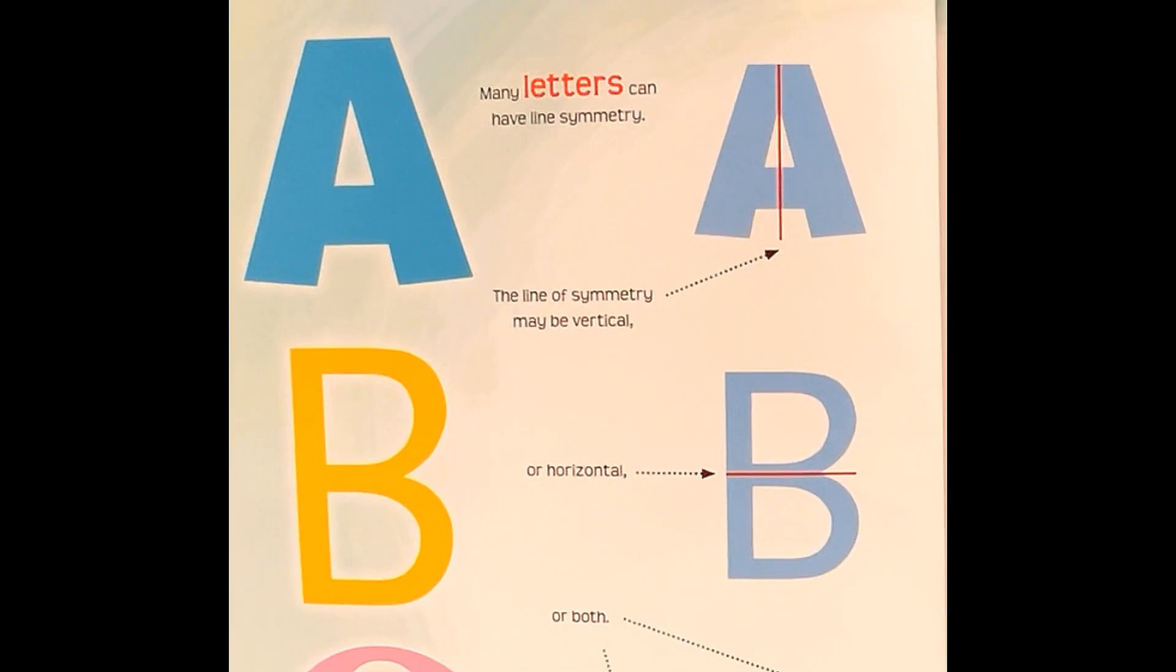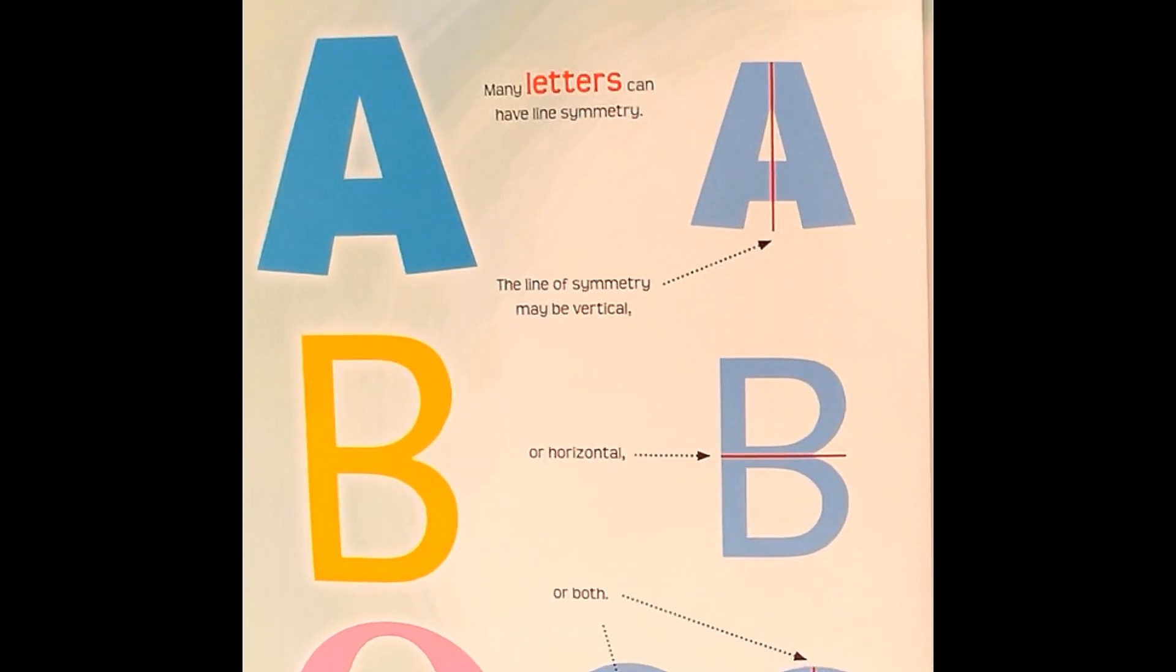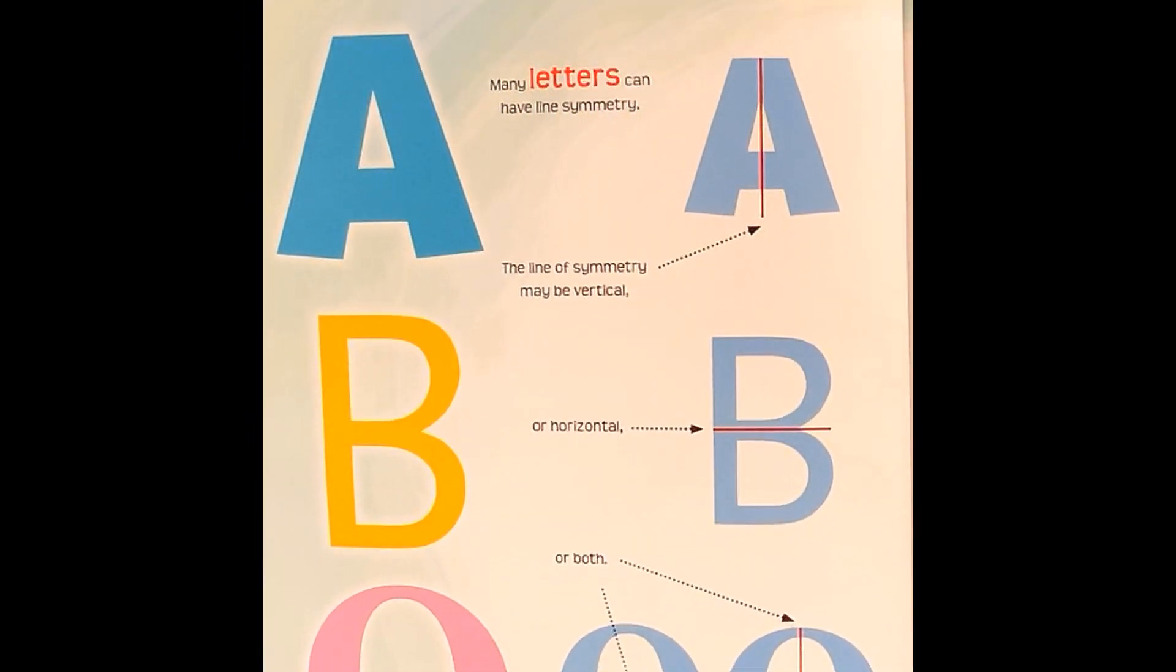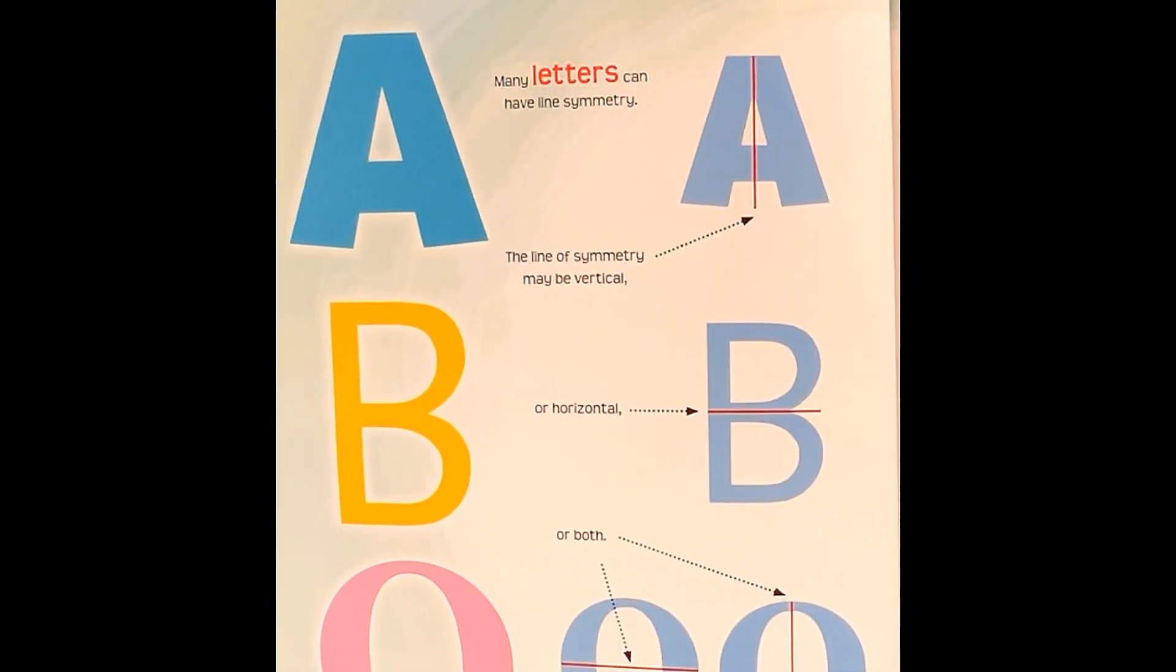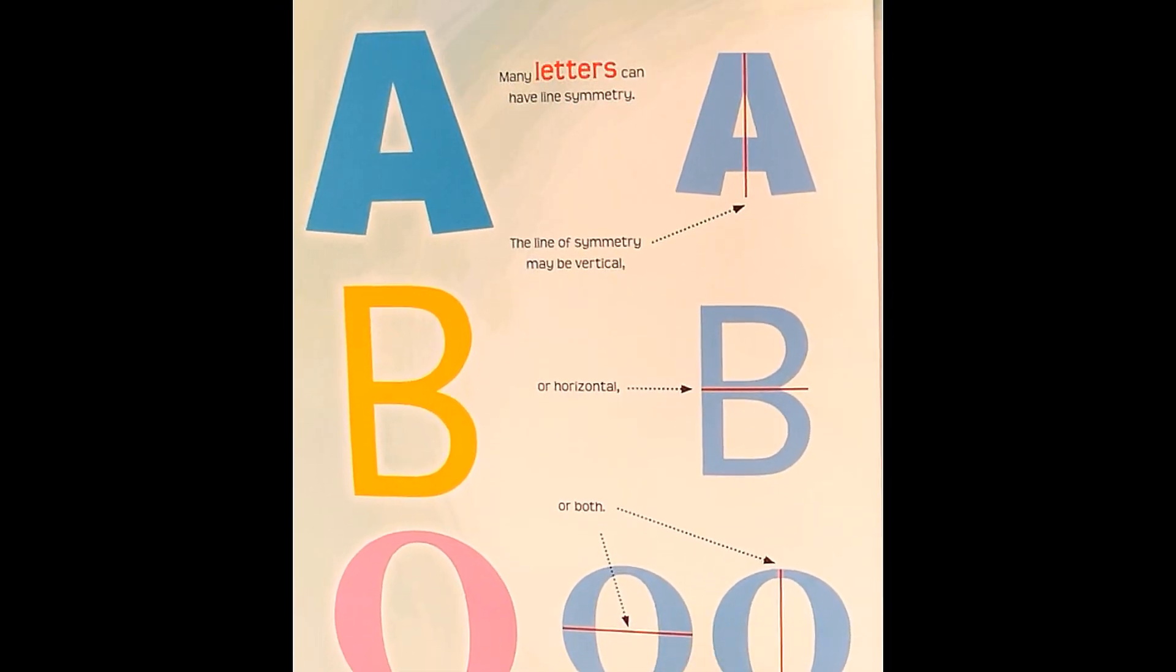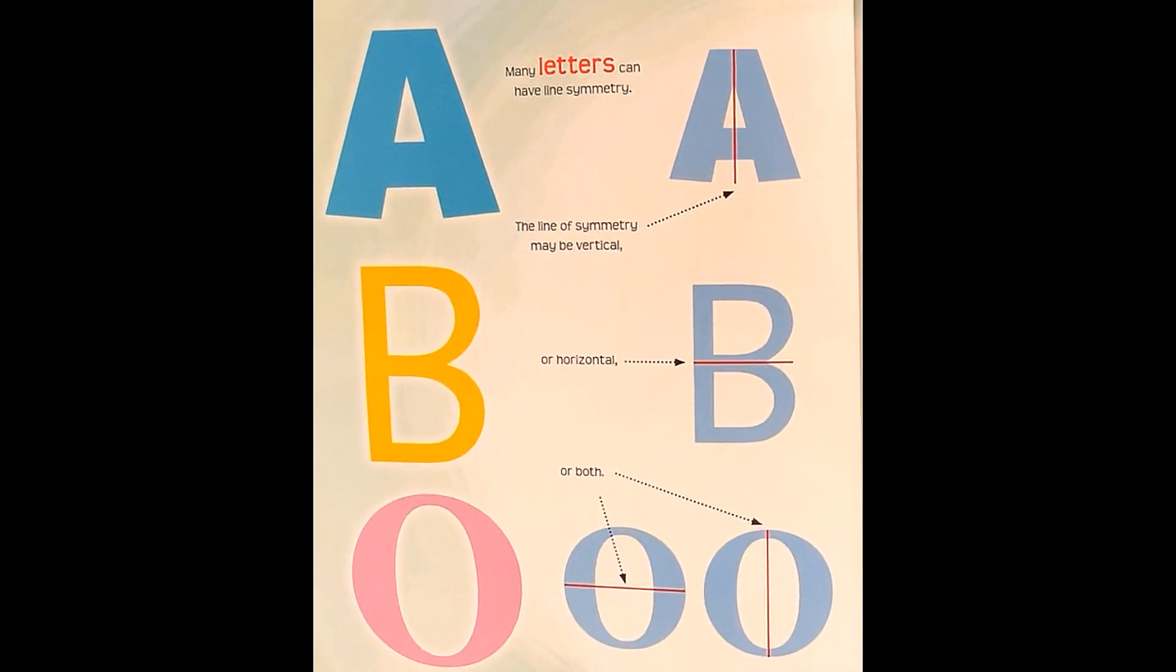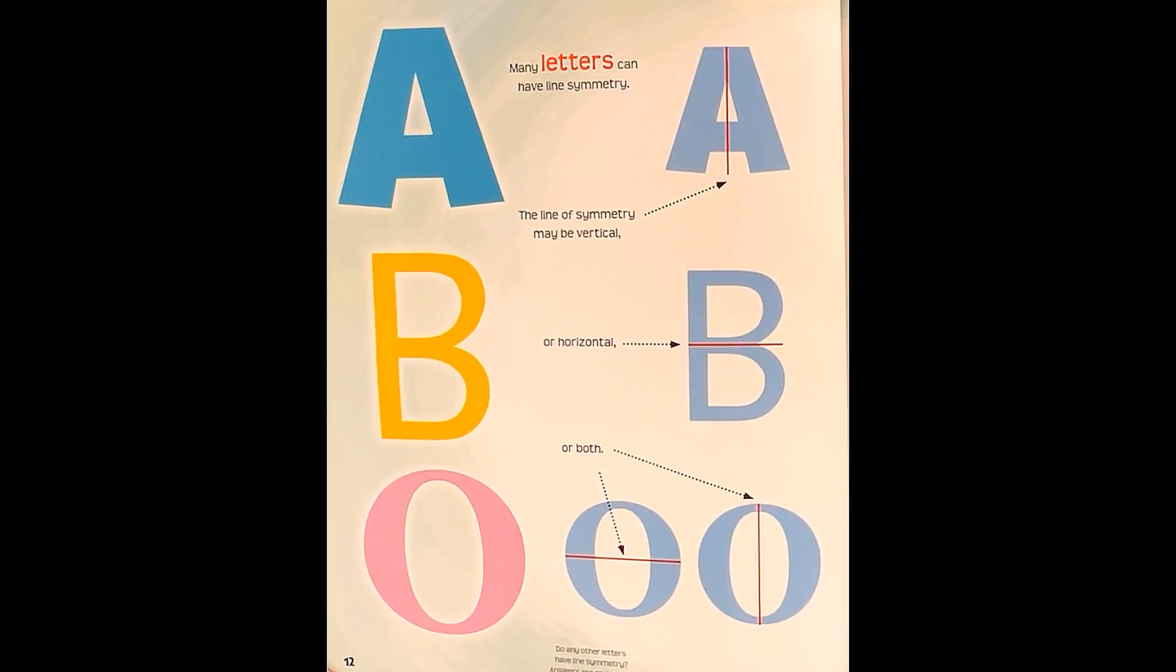Many letters can have line symmetry. The line of symmetry may be vertical, like this A, or horizontal, like this B, or both, like this O, horizontal and vertical lines of symmetry. Do any other letters have lines of symmetry? Answers are on page 28.